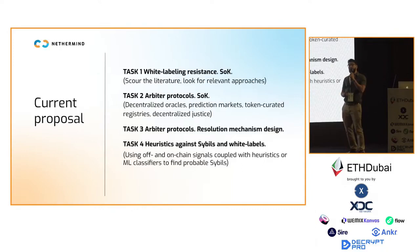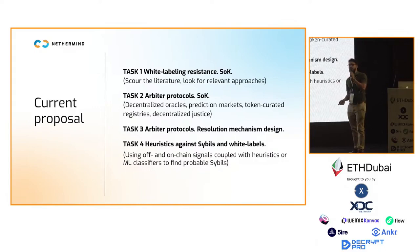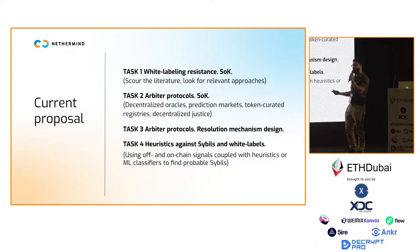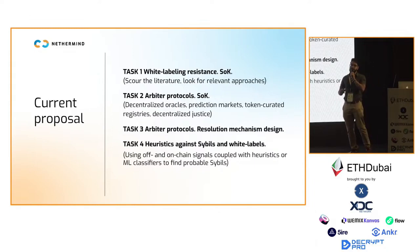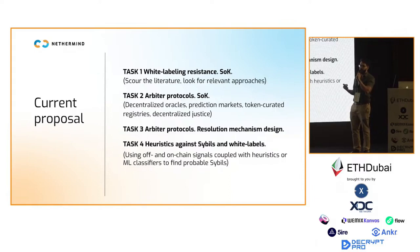We currently have a proposal on Lido's research forum and it is on Snapshot for DAO token holders to vote on. In this proposal we outline a 22-week research roadmap covering the following tasks: a systematization of knowledge on white labeling and relevant approaches in the literature; a review of arbiter protocols including decentralized oracles, prediction markets, token-curated registries, and decentralized justice; designing a resolution mechanism from these components; and developing heuristics against Sybils and white labels using off-chain and on-chain signals, coupled with heuristics or even machine learning classifiers to identify probable Sybils.